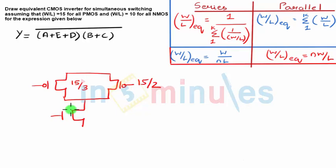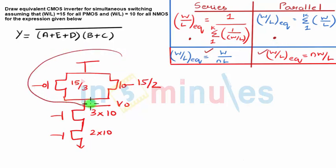For NMOS this was nothing but 3 times 10 in series with 2 times 10, and this was my equivalent circuit. We took the help of this equation and this equation to simplify because W by L was same. Now if you see, my W by L is no longer same and hence we will have to use this general formula for series and parallel connections.